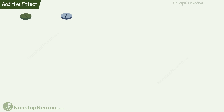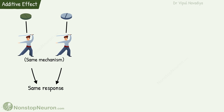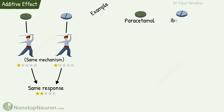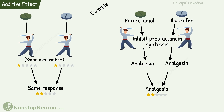Now let's talk about the additive effect. In this, two drugs produce the same response with the same mechanisms. Their combined effect is also an algebraic sum of individual effects. For example, combining paracetamol and ibuprofen for analgesia — they both inhibit prostaglandin synthesis. Thus the mechanism is the same, and the combined analgesia is equal to the sum of individual effects. So this is an additive effect.